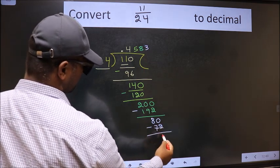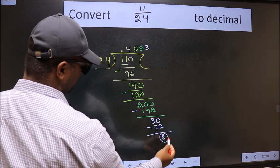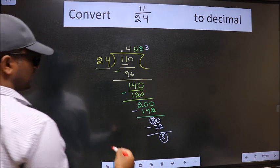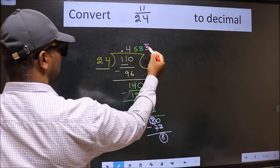Now we should subtract. We got 8 again. Earlier also we got 8. That means we get bar on this number.